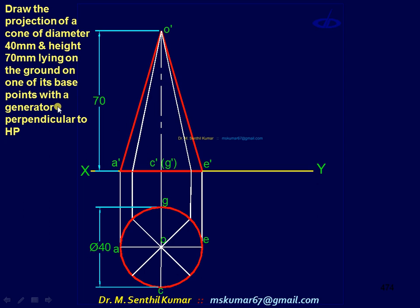You have to tilt this such that one generator is perpendicular to HP. This generator O dash E dash is perpendicular. Draw that first. With respect to this, complete the rest.